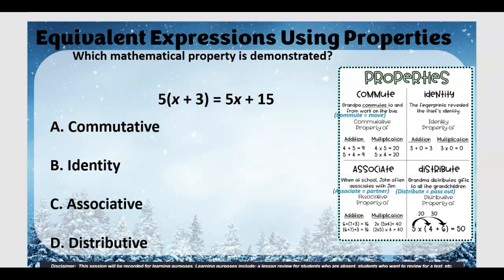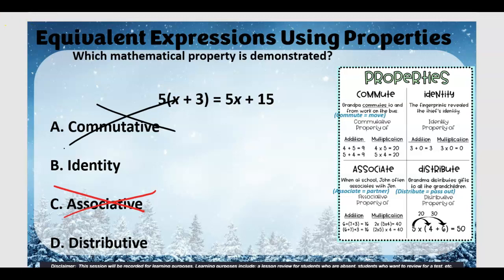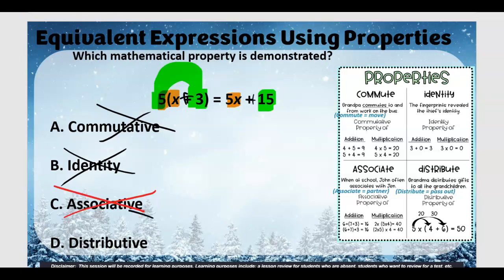What about this one? Right away I can see there are no parentheses on this side, so I can eliminate associative. What about commutative? There's a five x here, but there's sort of a five x there too — but where's the 15? There's definitely no 15 on this side. And it's not identity — there's no one or zero. So it's got to be distributive. Five times x is five x, and five times three is 15, with a plus sign. Distributive wins.